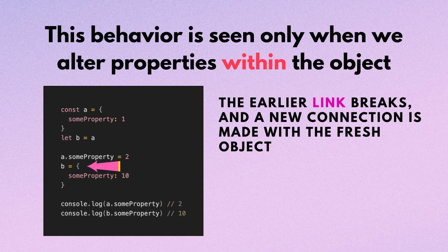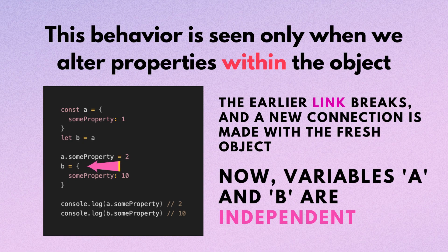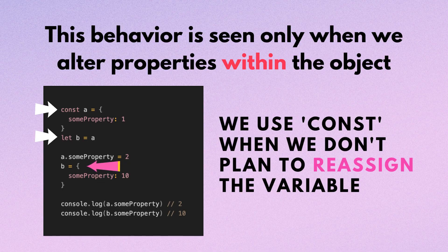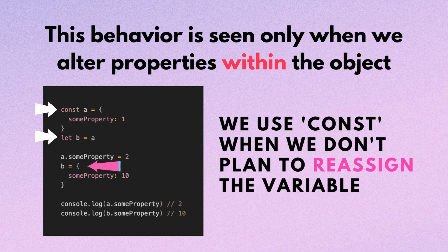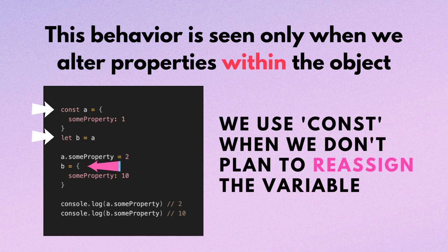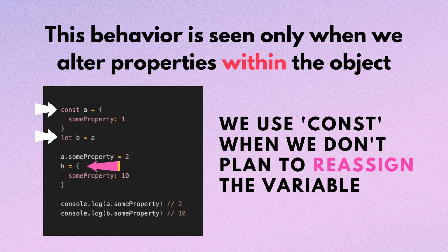On a side note, I used const for a and let for b for a reason. We use const when we don't plan to reassign the variable. Even though we can modify object properties without reassigning the object itself, we cannot reassign a. However, we needed to fully reassign b, so let was appropriate.